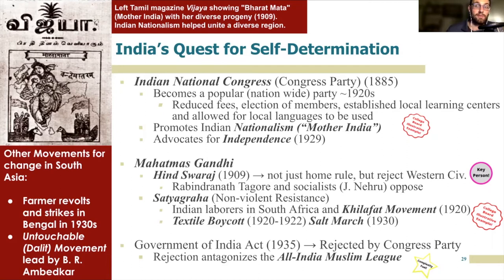While Gandhi became the icon of Indian independence, there were individuals in the movement who did not believe in rejecting everything Western civilization had to offer — most notably the poet Rabindranath Tagore, who believed India should work for the welfare of the world, and future leader Jawaharlal Nehru, who was a socialist not in favor of rejecting all the West offered. Nonetheless, despite these small disagreements, Gandhi's tactics of satyagraha, or non-violent resistance, were popular and effective.